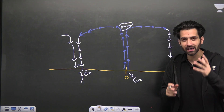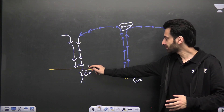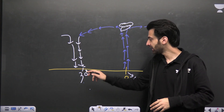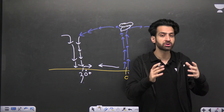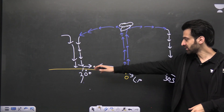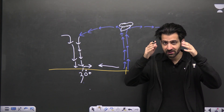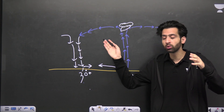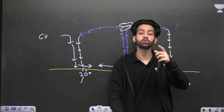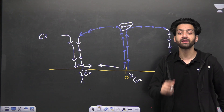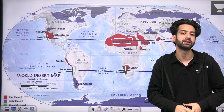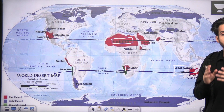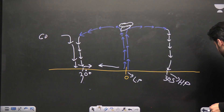A question for you to answer in the comments: when the air descends at 30 degrees, will it move back towards the equator or move away? The main reason is the air that ascended at the equator and the 60-degree region has started to descend over the 30-degree latitude. That is why the deserts are located on the 30-degree latitude, also known as the horse latitude or the subtropical high pressure belt.